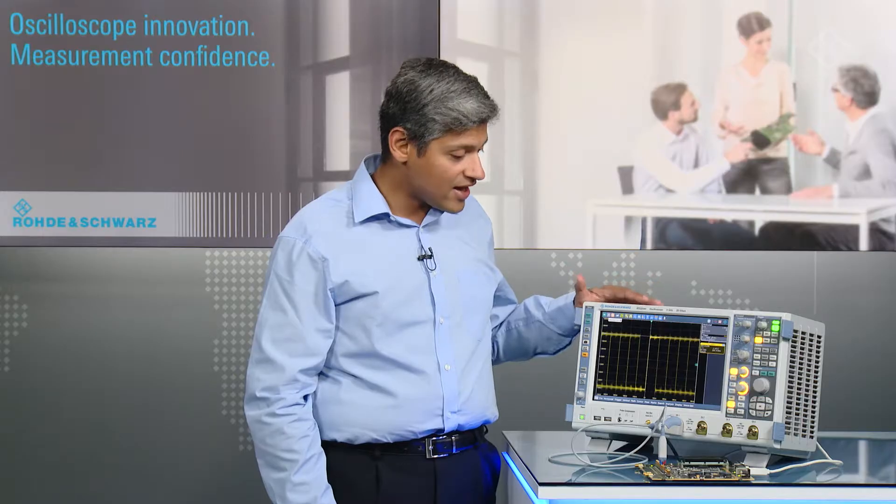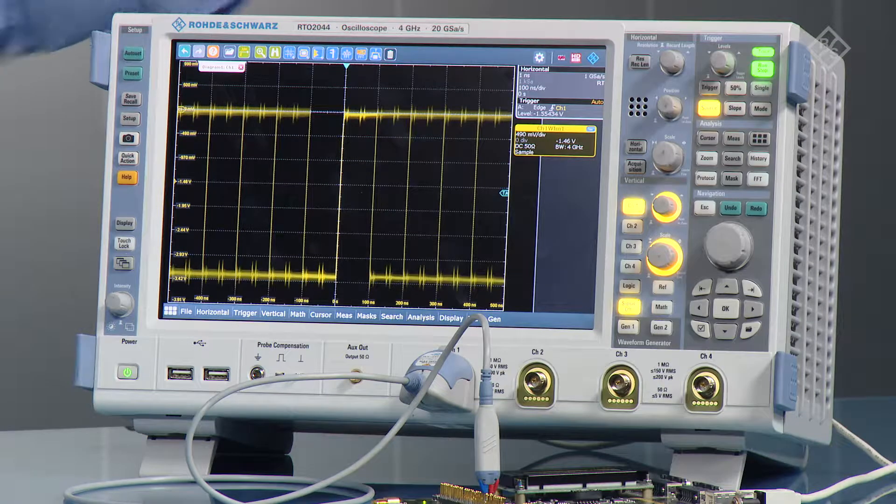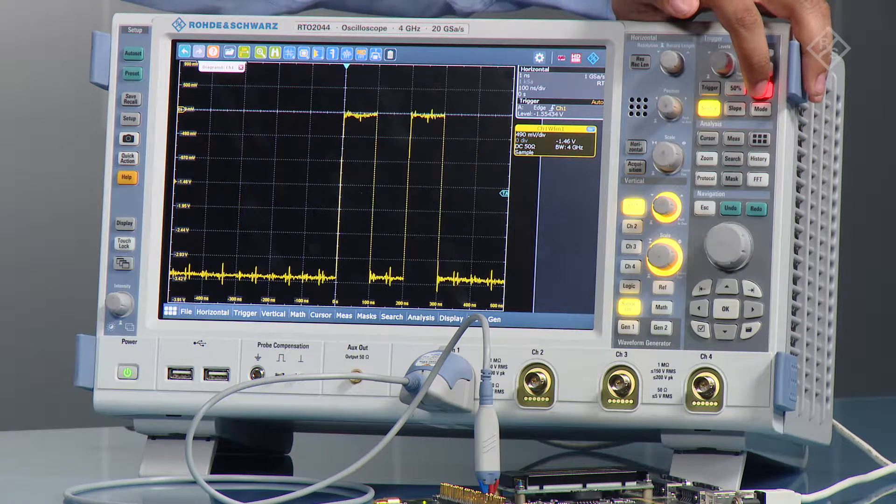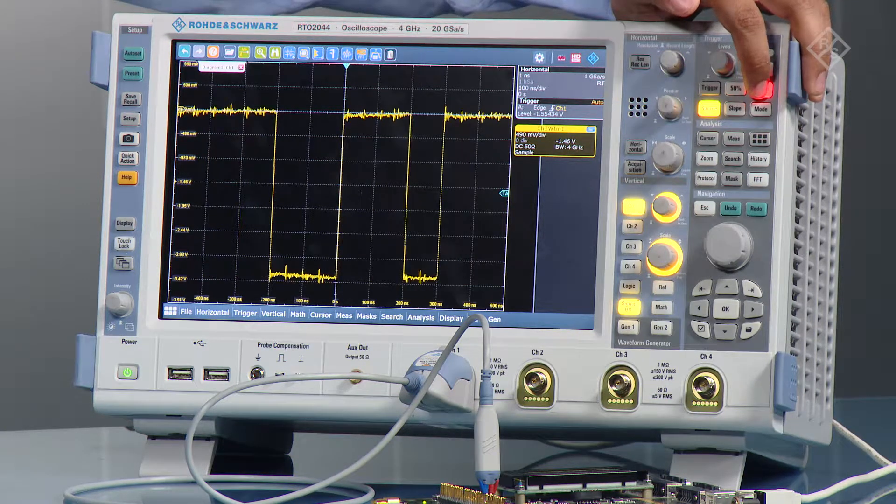So for this example, I have a data stream that's going through, and you can see that on the trace. If I do a single shot, you can see all the different widths of the ones and zeros that are coming in.